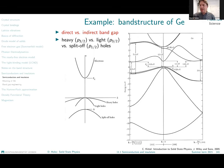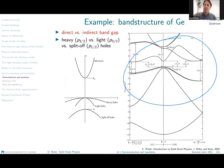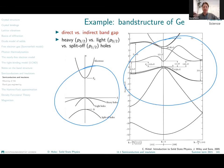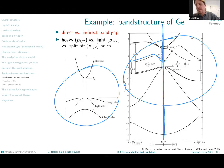On the right hand side we have the real band structure of germanium; on the left a schematic picture. The parabolic description is very useful: near the center of the Brillouin zone as well as at the Brillouin zone boundaries, the bands can be fairly well approximated by parabolas.